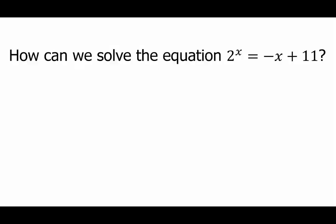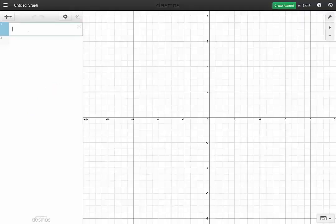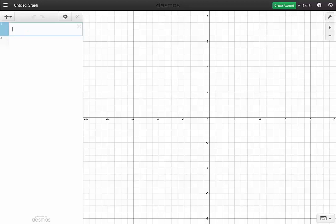Let us see how we can solve the equation 2 to the x equals negative x plus 11. This is a nice problem where students can break it down into a system of equations — one exponential and one linear. Let the left-hand side become y equals 2 to the x, and the right-hand side become y equals negative x plus 11. We can solve this graphically, since at this stage students have probably not been exposed to logarithms.